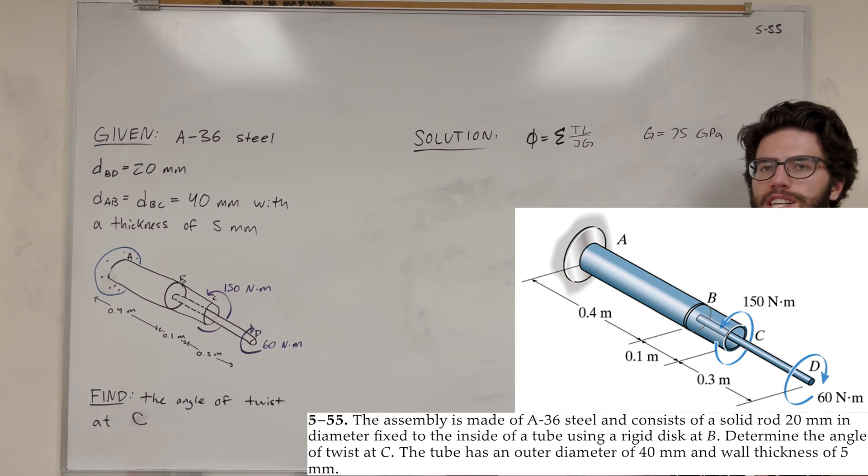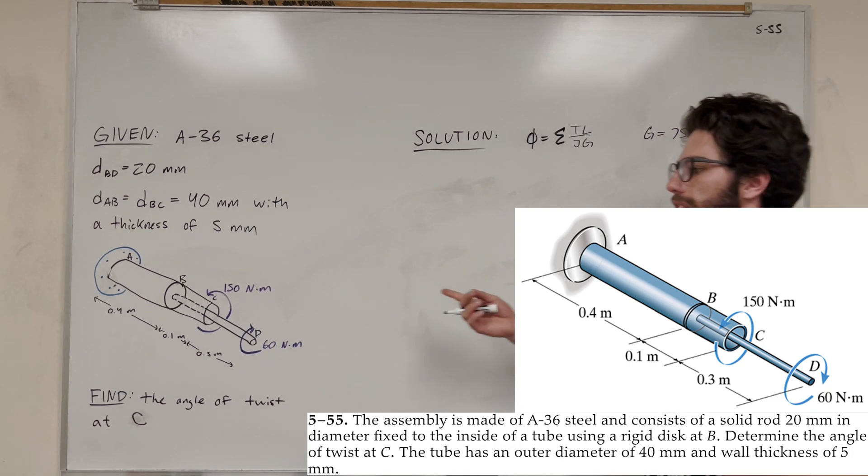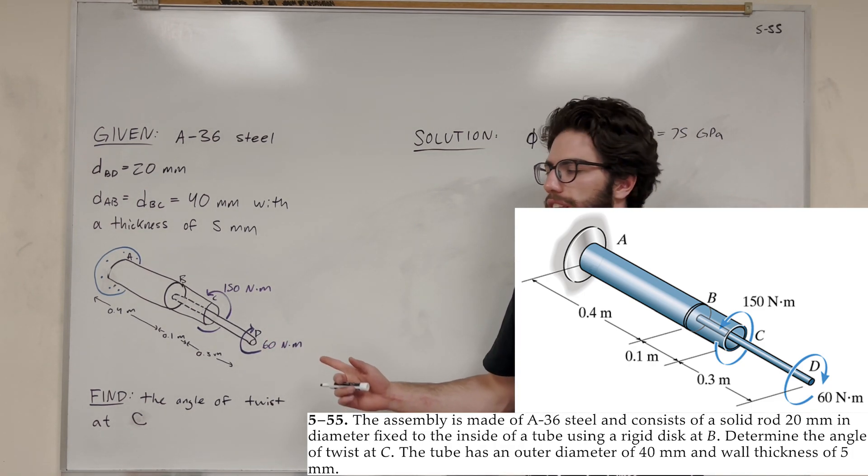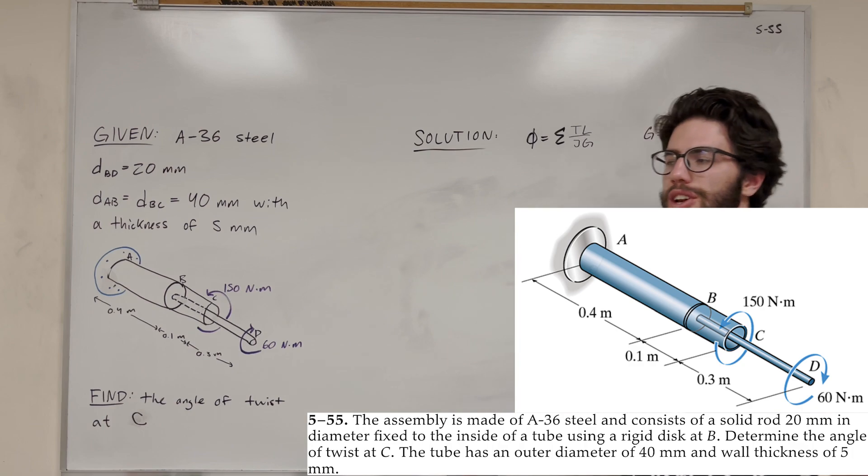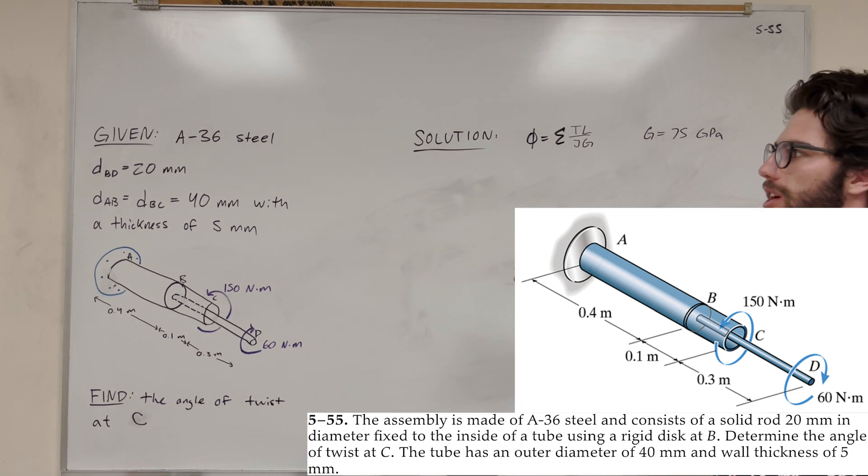What's up Cal gang? Welcome back to mechanics and materials. Let's go ahead and solve this problem. I just solved 5.54 which is very similar. We found the angle of twist of D, now we're trying to find the angle of twist of C. Go check out that video if you haven't already.